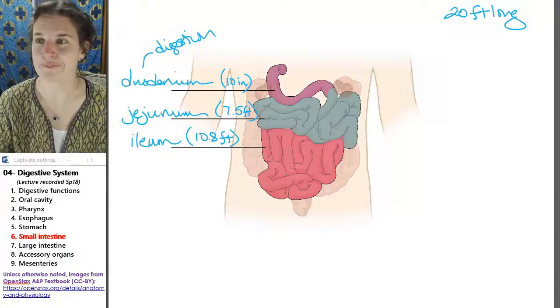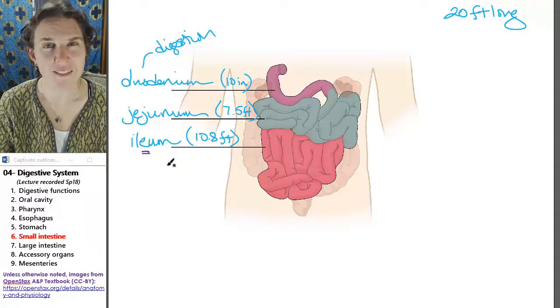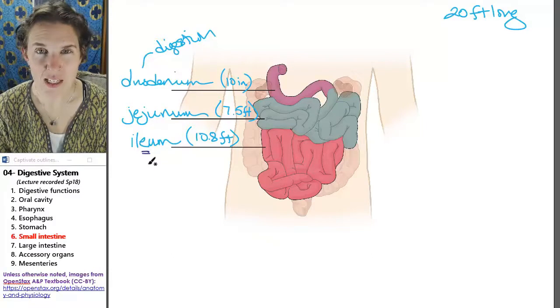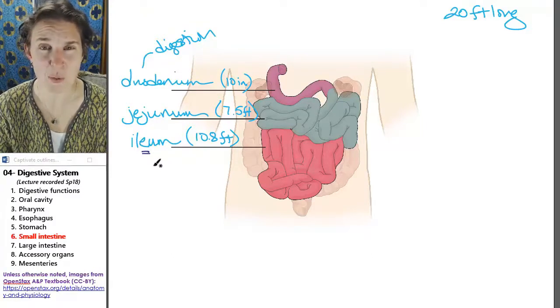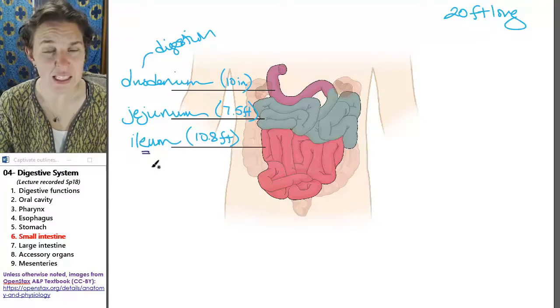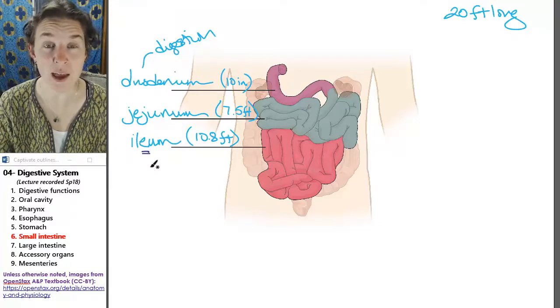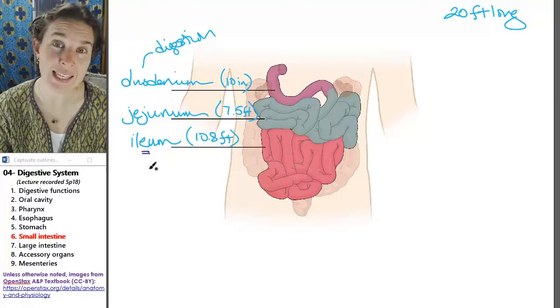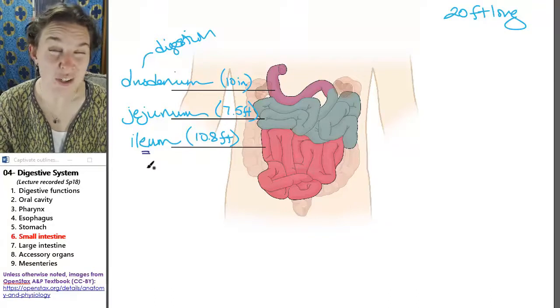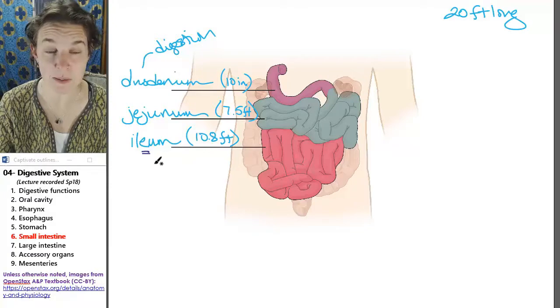Now, ileum, you know, you have an ilium in your pelvic girdle. It's a bone. And it's spelled with an I. The ileum in your gut is spelled with an E. And I remember that because ileum is where you eat. So make sure you spell ileum correct because it will be wrong if you put an I in that space.